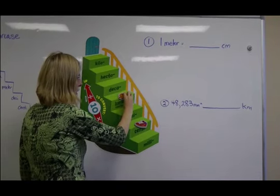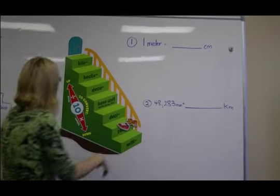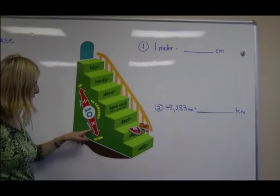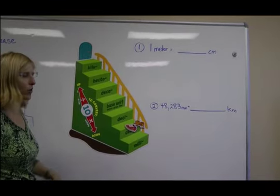And you see that the cat needs to walk one, two steps in order to get to the centimeter unit. If you look on the side of the staircase, if you're going down the staircase to convert units, you multiply by ten for every step that you take.